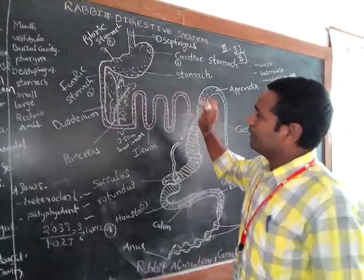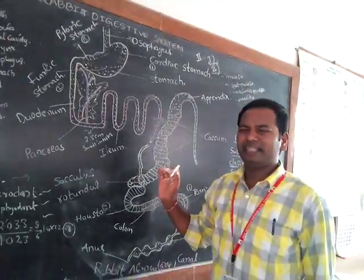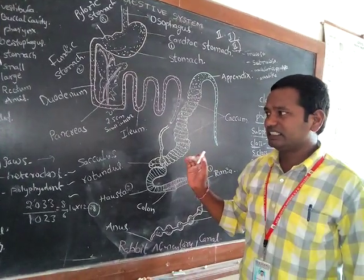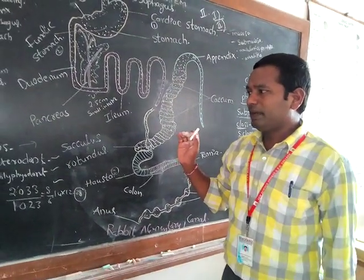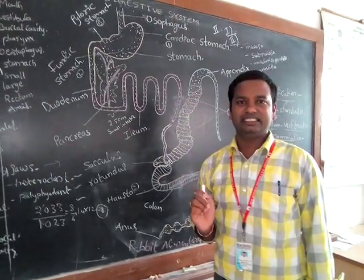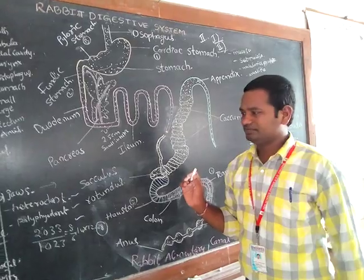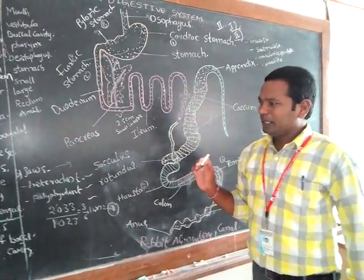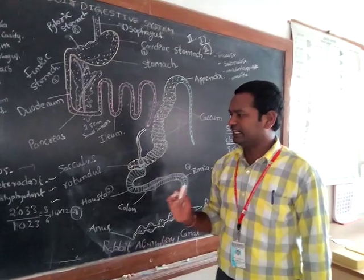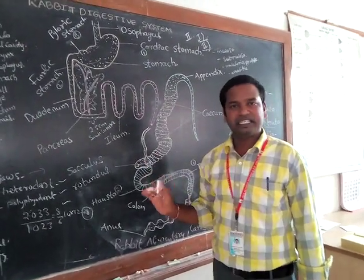Next, the buccal cavity. The buccal cavity is bounded above by the palate and on the sides by the jaws. The floor of the buccal cavity contains the tongue. The buccal cavity mainly has three parts: the palate, the jaws, and the tongue.